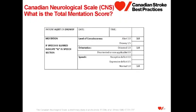Looking at the total mentation score for our patient case scenario: he is alert, receiving a score of 3; he is oriented, receiving a score of 1; and he has normal speech, so his total mentation score is 5.